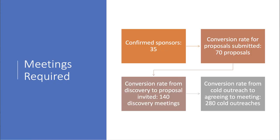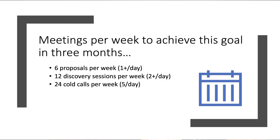So we've already agreed that you need 35 sponsors. Therefore, you'll have to submit 70 proposals — not cold, but 70 proposals that were invited — as a result of 140 discovery meetings, which were the result of 280 cold emails, cold calls, or cold outreaches. An average week would look like this: 6 proposals submitted per week (just over one a day), 12 discovery sessions per week (about two a day), and 24 cold calls per week (about five per day). This is why the key to good prospecting is volume.